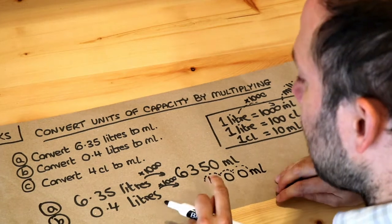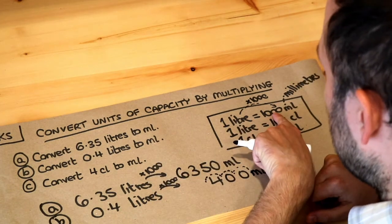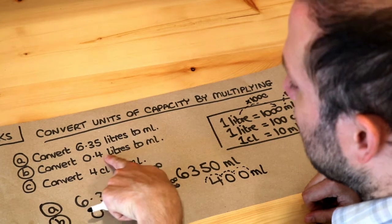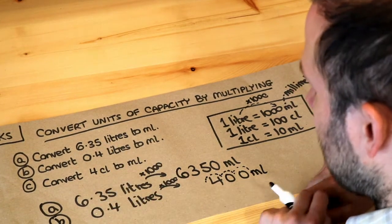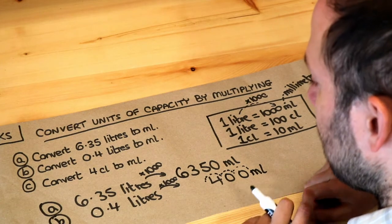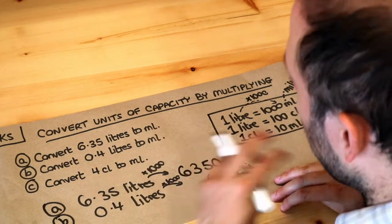And instinctively, if one liter is a thousand milliliters, then 0.4 liters, because 0.4 is less than one liter, we know the answer is going to be less than a thousand milliliters. So we should have a sense of what kind of answer we expect.